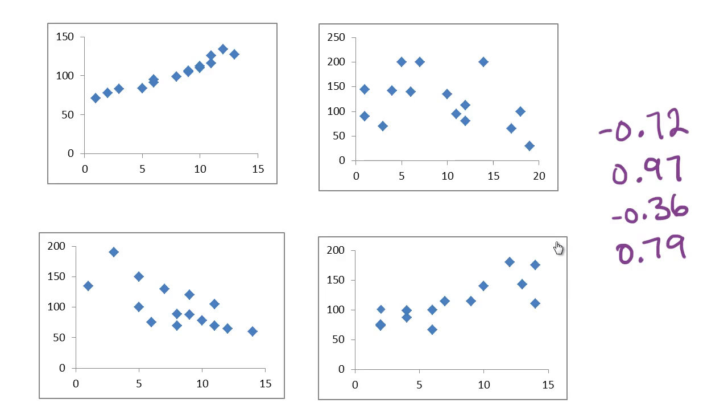So now to practice that. Here are four scatter plots that I've just quickly drawn, and these each have an r value of one of the following four. So we've got negative 0.72, positive 0.97, negative 0.36, and positive 0.79. And so hit pause and see if you can work out which of these four corresponds to which of these r values.